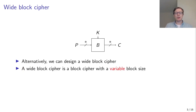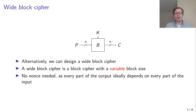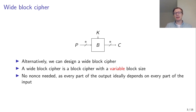What we can do instead is design a wide block cipher. A wide block cipher is simply a block cipher with a variable block size. We do not really need a nonce for this, as every part of the output depends on every part of the inputs ideally. But if we encrypt the same plaintext twice, we do get the same ciphertext, so we do leak some information.